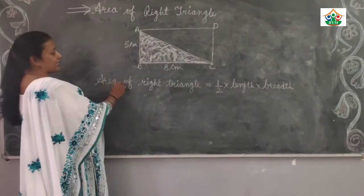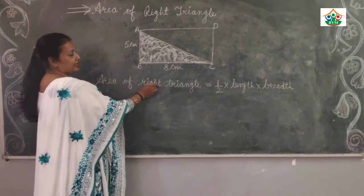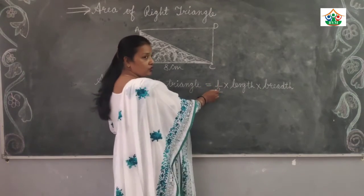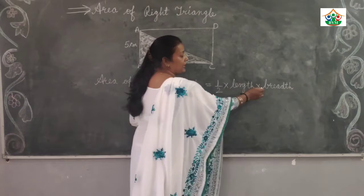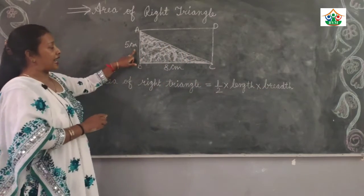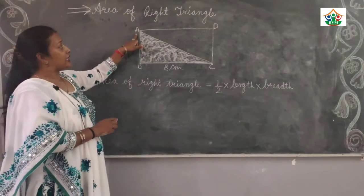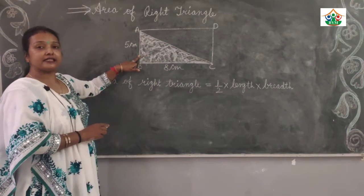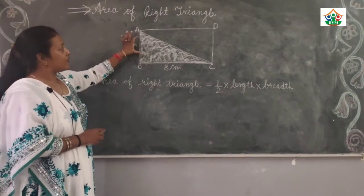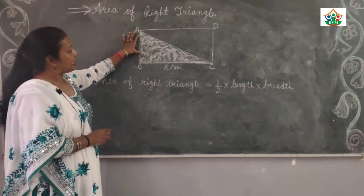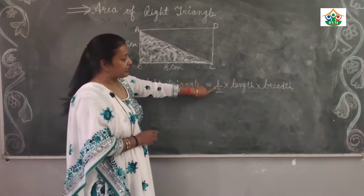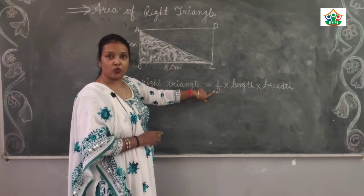We will find the area of a right angle triangle with the formula: 1 over 2 multiply length multiply breadth. You know that the area of a rectangle is equal to length multiply breadth. We will find the area of the half part, so we have written 1 over 2.